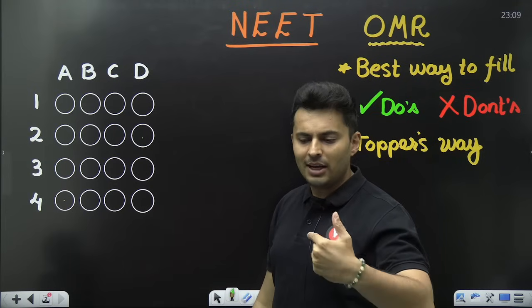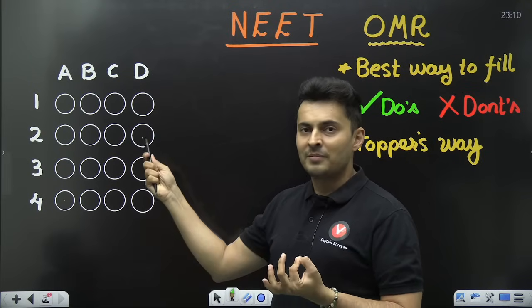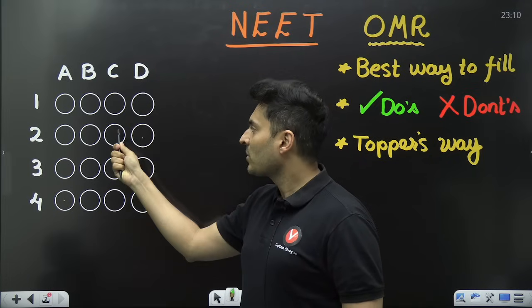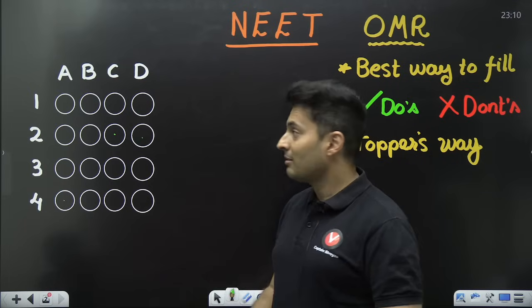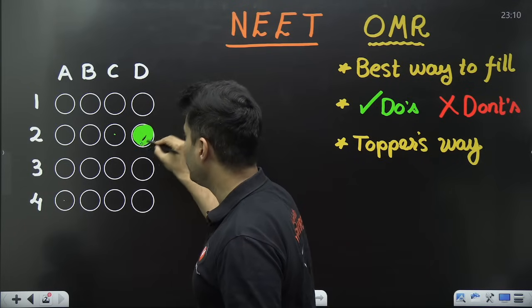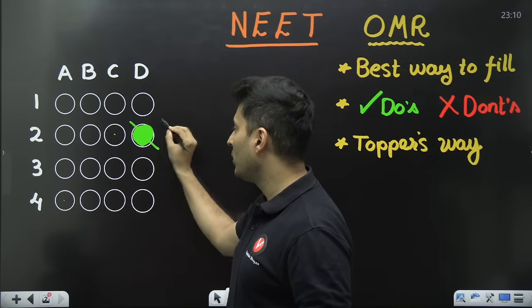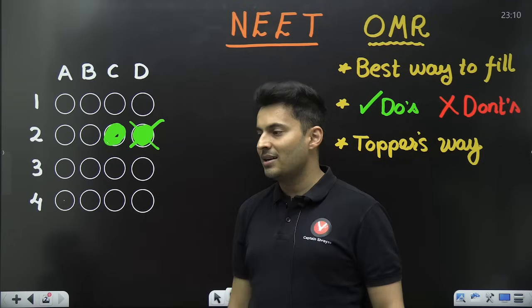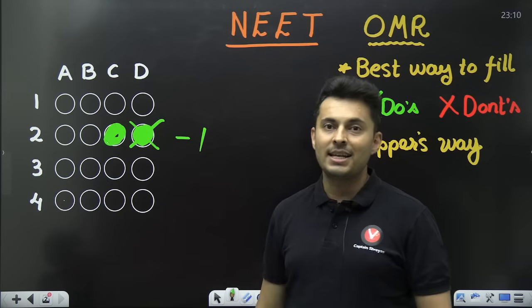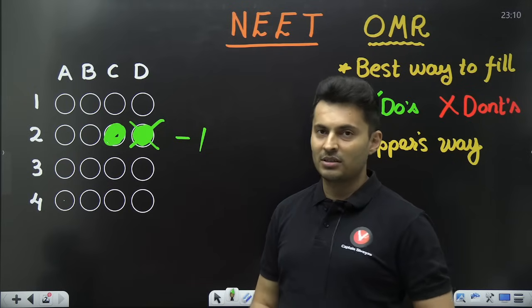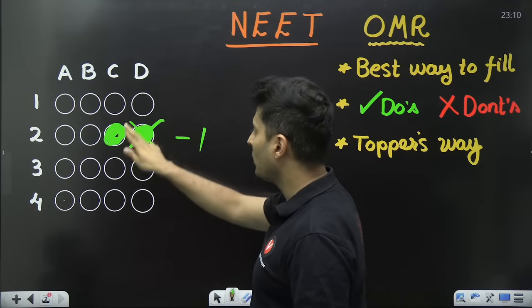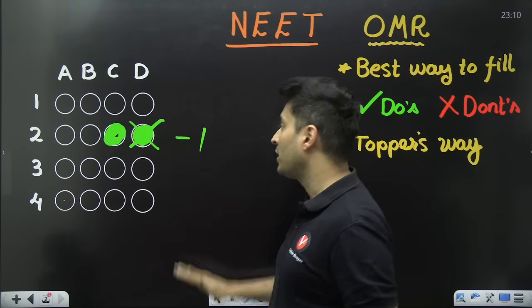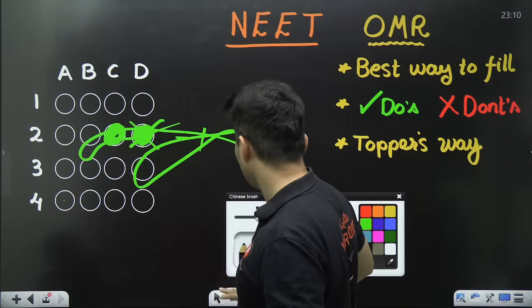But remember if you had bubbled this up completely then there is no way you can cancel this. You cannot do this and then say okay let me bubble this. No. OMR is not going to consider this. In fact it will give you negative one. So be very careful about this. You cannot mark multiple options. You cannot cross it out. You cannot punch a hole in the paper. All those things might even lead you to disqualification. You don't want to waste a complete year because of this.